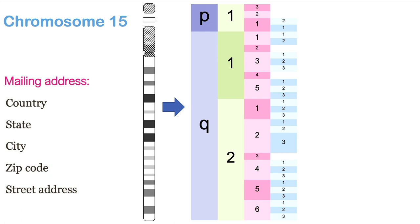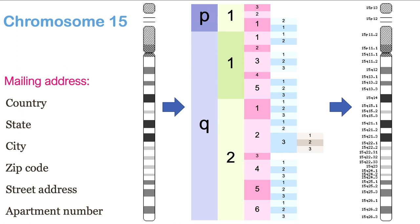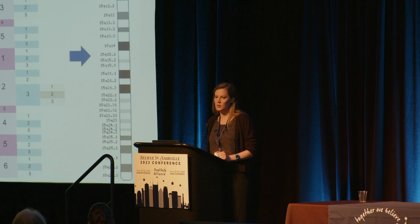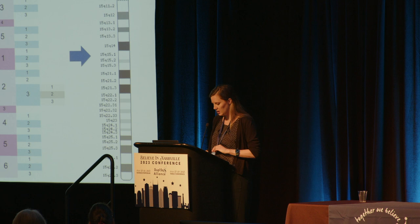Going further, like a street address, Q21 can be broken into 1, 2, and 3. And sometimes there's even more refinement — like an apartment number — where Q22.3 can have 1, 2, and 3. Combining all of this gives us the long set of numbers you often see when talking about chromosome 15. We say the chromosome number — 15 — then the arm — Q — then each subsection number separately. So it's '15Q11.2' or '13.1' — that's a pro tip if you want to sound knowledgeable with your geneticist.